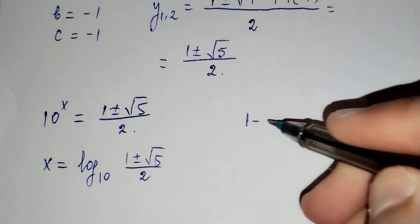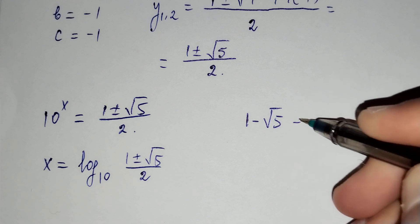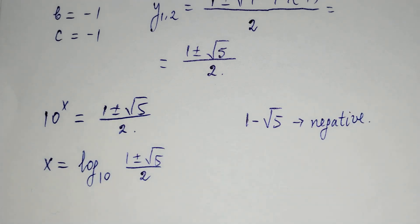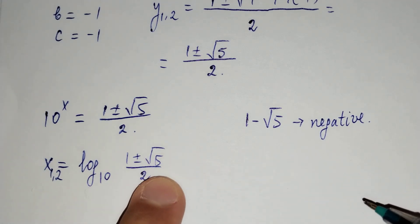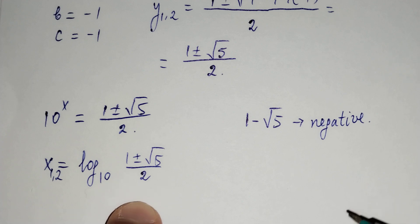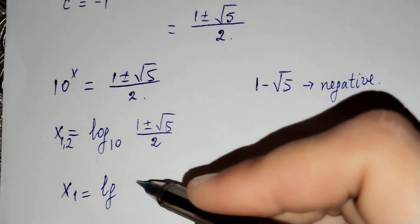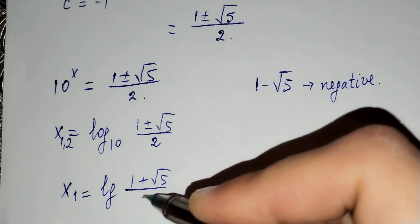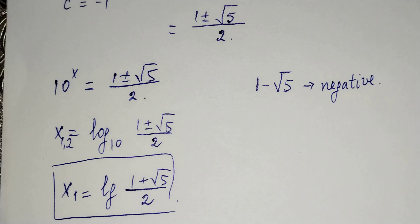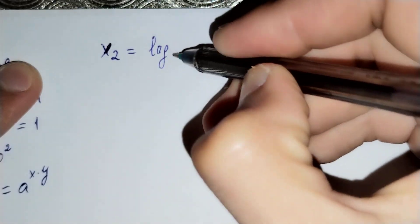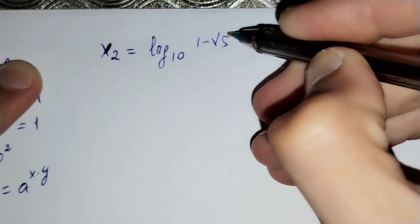We know that 1 minus square root of 5 is negative. That's why log base 10 of 1 minus square root of 5, over 2 is not a real number. So x₁ equals to log base 10 of 1 plus square root of 5, over 2. Now let's find x₂, which equals to log base 10 of 1 minus square root of 5, over 2.